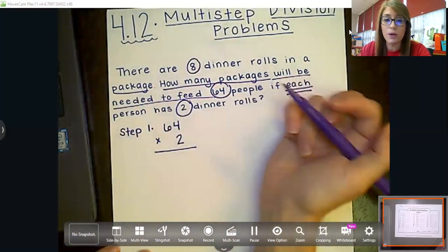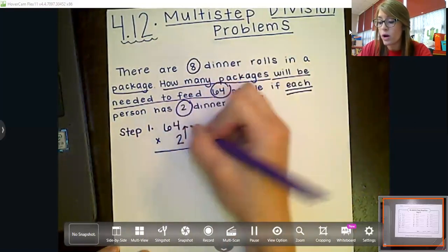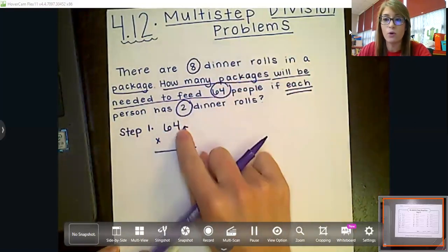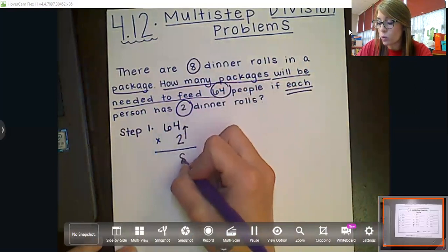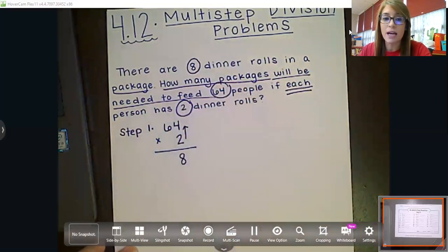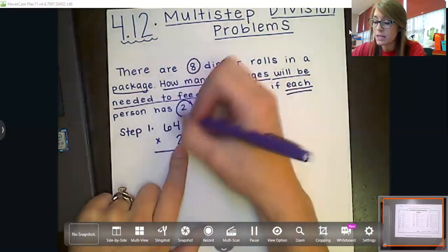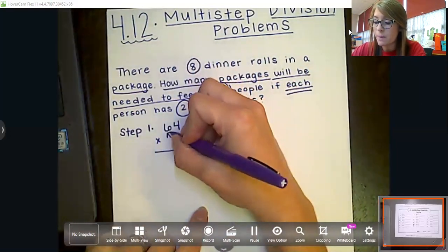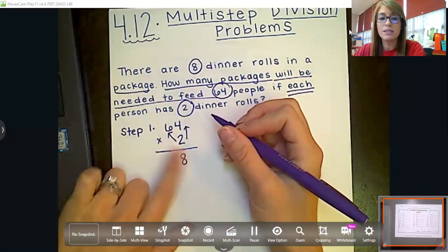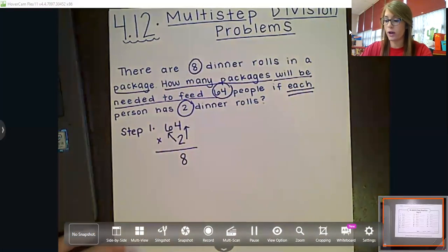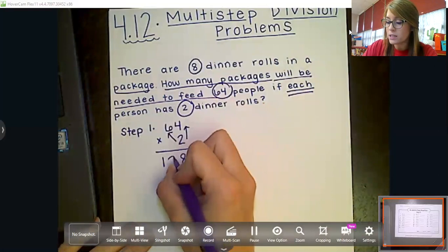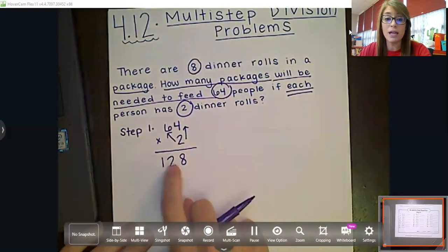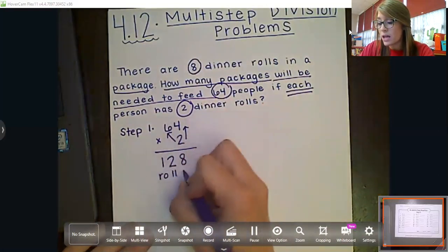First thing we do, always ones times the ones. So what is two times four, boys and girls? Nice and loud for me. Very good. It is eight. So I'm going to put that eight right here. Then the second thing I'm going to do, I'm going to come back to this ones place, and then I'm going to multiply it by my tens place. What is six times two, fourth grade? Very good. Two, four, six, eight, 10, and 12. So I'm going to put that 12 right down here. So we need 128 rolls. That's how many we need.